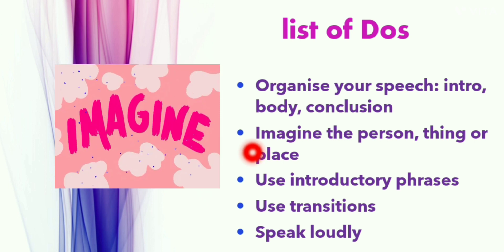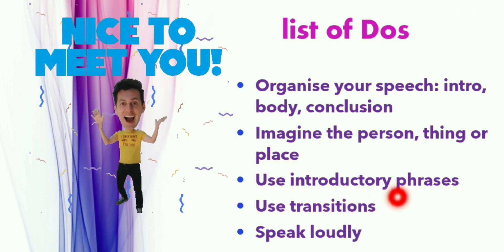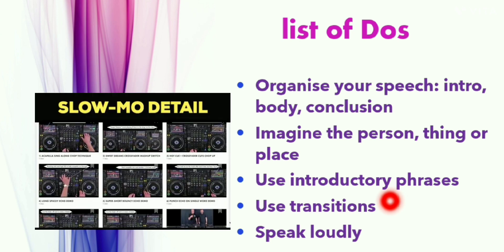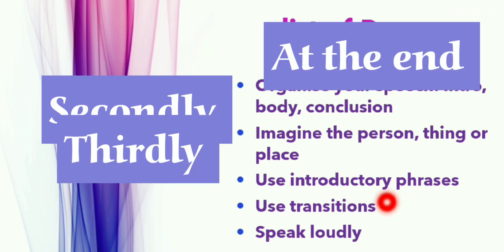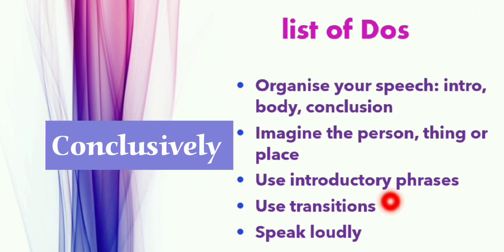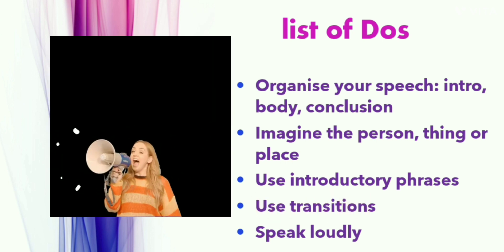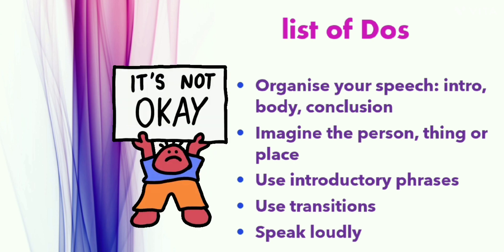Whatever you have been given — a person, thing, or place — it is better to imagine it vividly. Use introductory phrases and phrases for conclusion as well. Use transitional devices like firstly, secondly, thirdly, at the end, in the meanwhile, on the contrary, and conclusively. Use these transitions throughout your speech. Finally, speak loudly — if you speak too softly and the examiner cannot hear you properly, your marks will be very low.